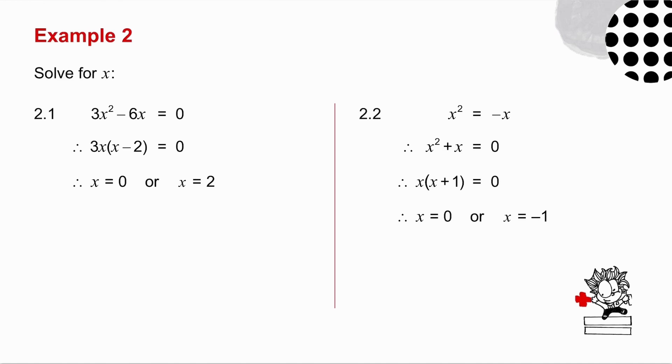In number 2.2, it's not in standard form, so the first thing to do is take the minus x across. So you get x squared plus x equals 0. Take out a common factor. Two things multiply to give you 0, so either x is 0, or x plus 1 is 0. In other words, x is equal to minus 1.